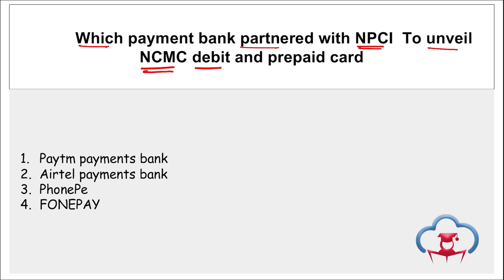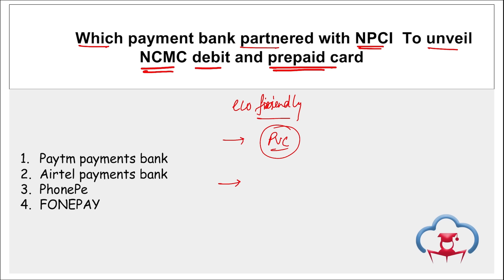Which payment bank partnered with NPCI to unveil the NCMC debit card and prepaid card? This is an eco-friendly debit card — NCMC stands for National Common Mobility Card. The card is made of polyvinyl chloride and works on the RuPay network. It is Airtel Payments Bank, which partnered with NPCI and launched this card in line with the 'One Nation, One Card' vision. Customers can use this card at various payment points, including metro, buses, and parking facilities.